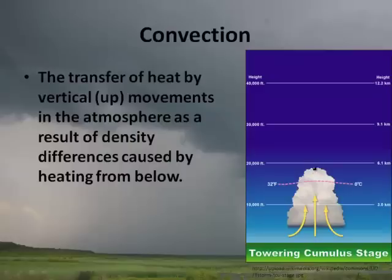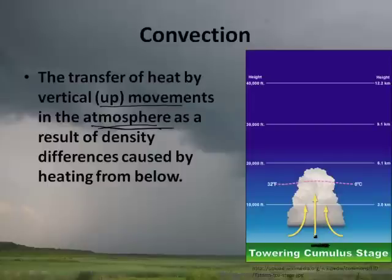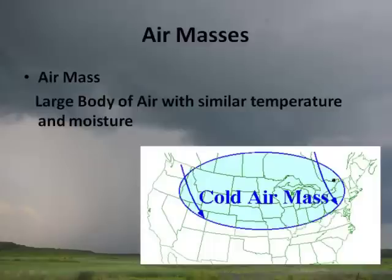Convection is the transfer of heat by vertical or upward movements in the atmosphere. It's not just the atmosphere — convection currents are inside the earth, inside suns, and in the ocean. It's a very important concept for how energy is transferred. Density differences caused by heating from below cause warm air to rise and create weather, particularly severe weather.